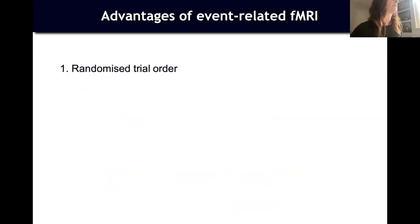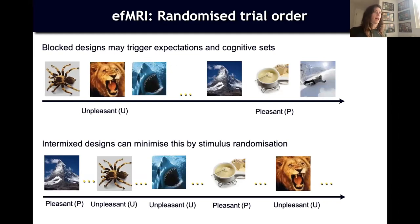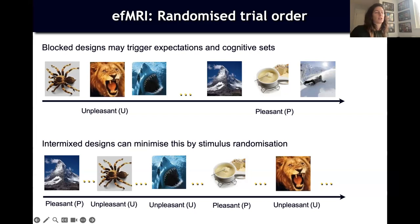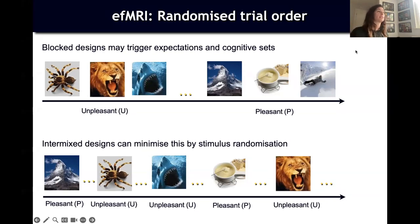Why do we love event-related designs? First, they allow you to randomize the order of your stimuli. If you present a batch of stimuli of the same condition at once, you introduce expectations and cognitive bias in participants — they know what's going on and might infer things about your stimuli you don't want them to. With an event-related design, you can randomize presentation order and get around this issue.